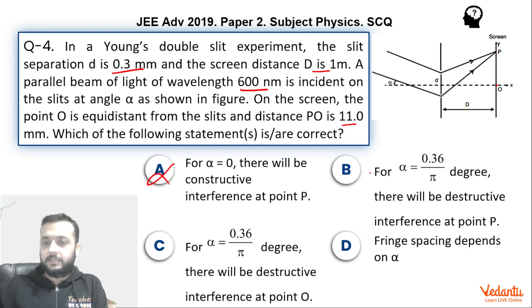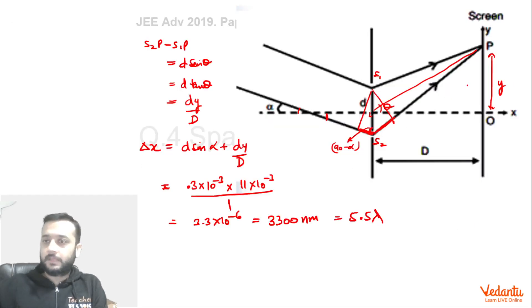If you talk about option B, for alpha equals to 0.36 by pi degrees, there will be destructive interference at point P. So we have to talk about this again interference pattern at point P, the type of interference at point P for the alpha equals to 0.36 by pi degree. Now, you can see that again, this is a very small angle because we are talking about 0.36 by pi degree. So we can write sin alpha as alpha.